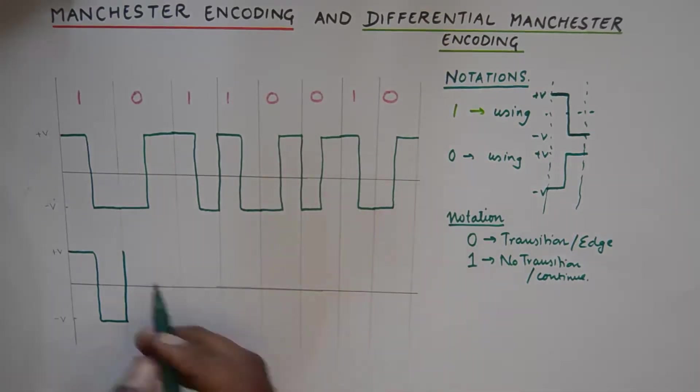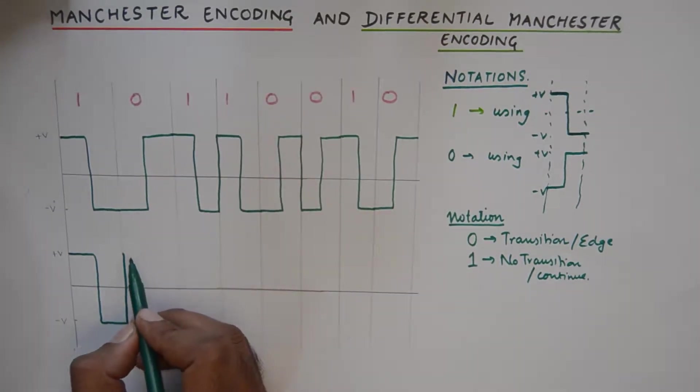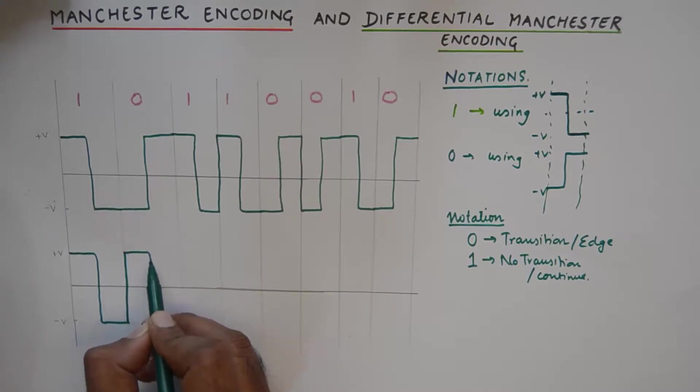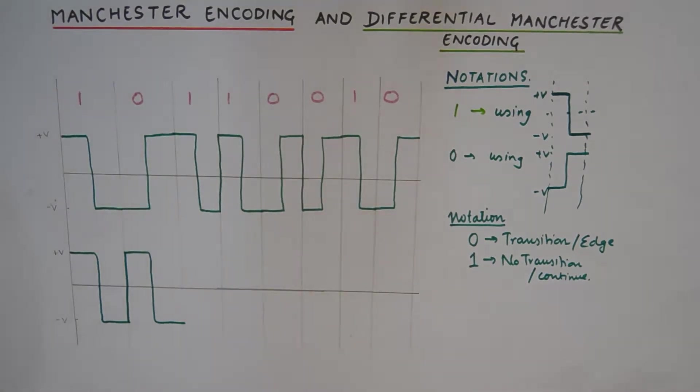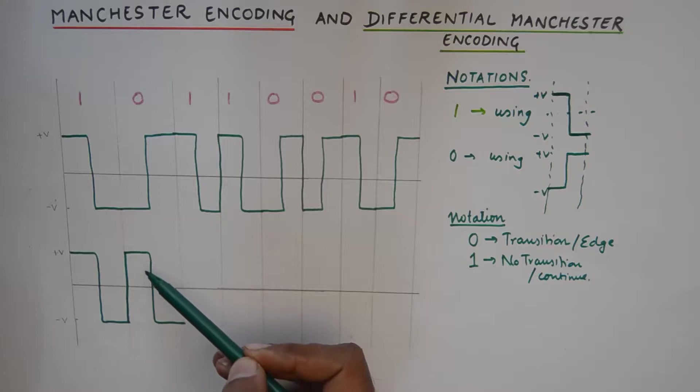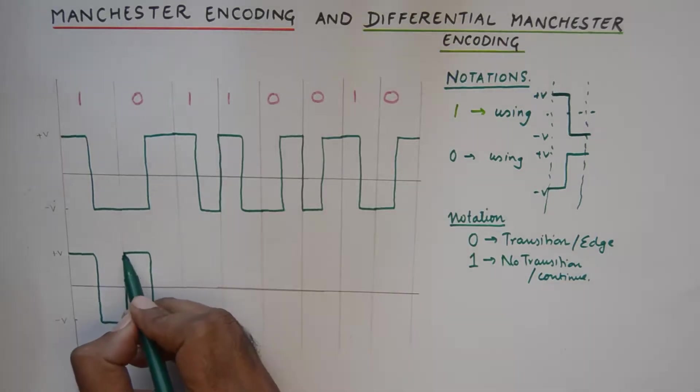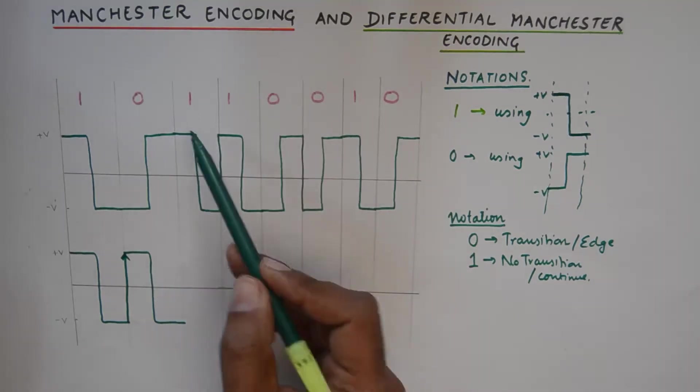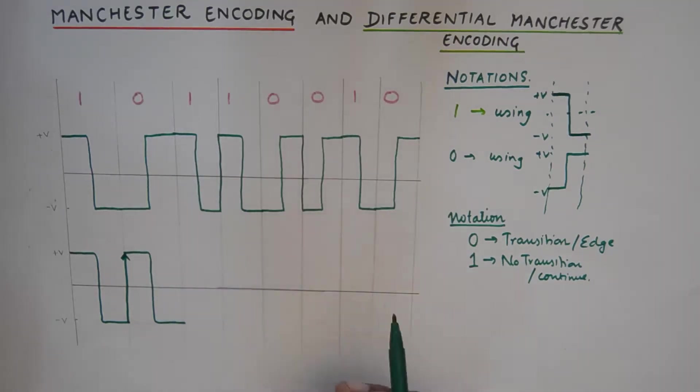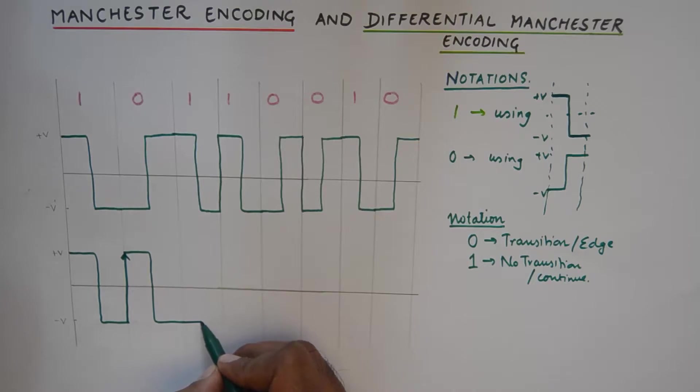So please understand this notation of zero does not correspond to its normal behavior but because of a transition happening. This will look like a one but this is not a one, it is a zero representation. So a transition can be shown like this and then after this zero we have a one and we do not do any transition on one and we continue with the wave. So no transition will result in this kind of a wave which is similar to what one is represented in Manchester encoding.